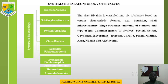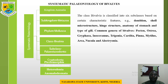This is the systematic paleontology of bivalves. Bivalves are classified under Kingdom Animalia, Sub-kingdom Metazoa, and Phylum Mollusca, class Bivalvia. The subclasses are: Palaeotaxodonta, Cryptodonta, Pteriomorphia, Palaeoheterodonta, Heterodonta, and Anomalodesmata. The class Bivalvia is classified into six subclasses based on certain characteristic features including the dentition, the shell microstructure, the hinge structure, the anatomy of the stomach, and type of gill.